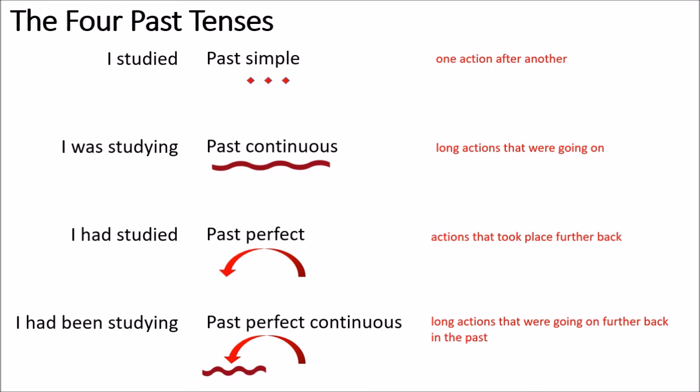We've already studied the past simple and the past continuous and done some exercises on these. We have not yet done any exercises on the past perfect and the past perfect continuous. For this, you're going to need to study the exercises which start on page 73 for the past perfect and on page 76 for the past perfect continuous.